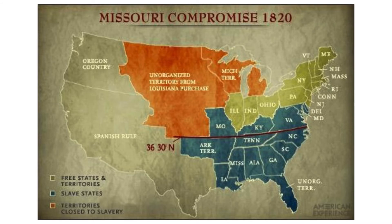The Missouri Compromise is basically right here. It relates to a compromise over slavery. You have this issue of representation in the federal government — remember the Three-Fifths Compromise — where the South wants to include the slave population because they want to have more power in Congress. So every time a new state is added to the union, this issue comes up, because that state gets senators and congressional representatives based on population.